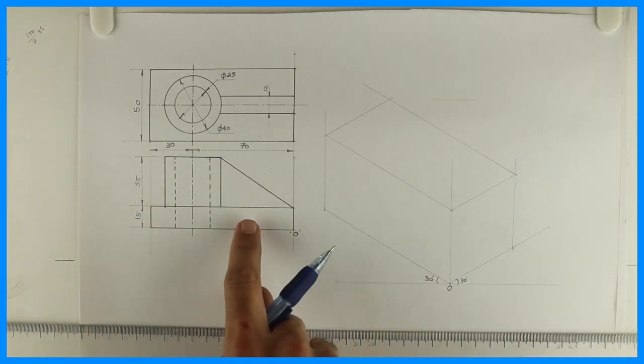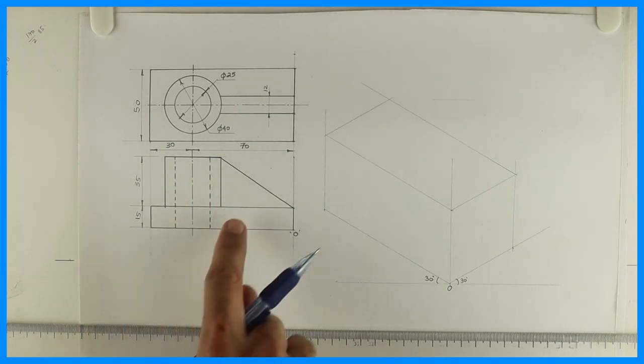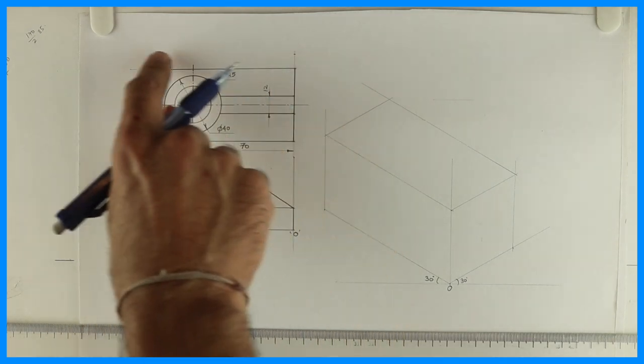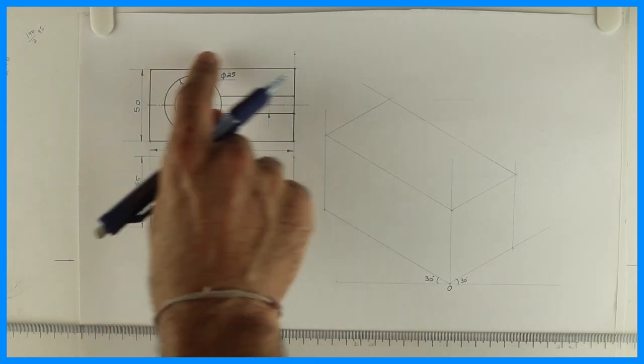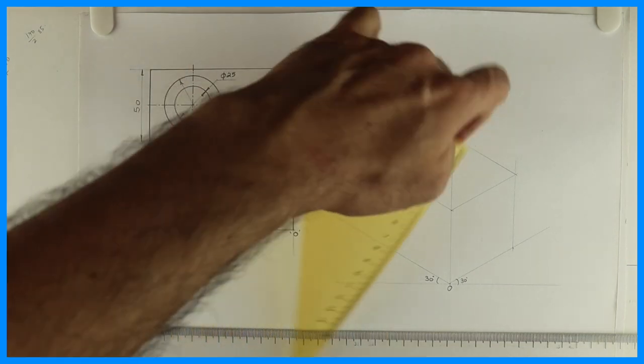So after drawing the box, we'll see the part 1, 2. See, 1 is this part, entire block. This is circular part and this is slope. So first we will draw the bottom part.